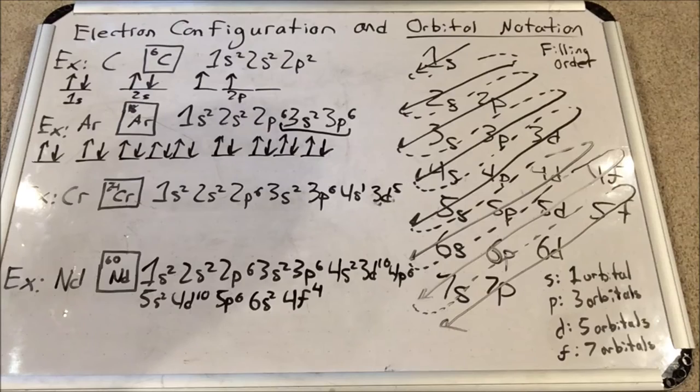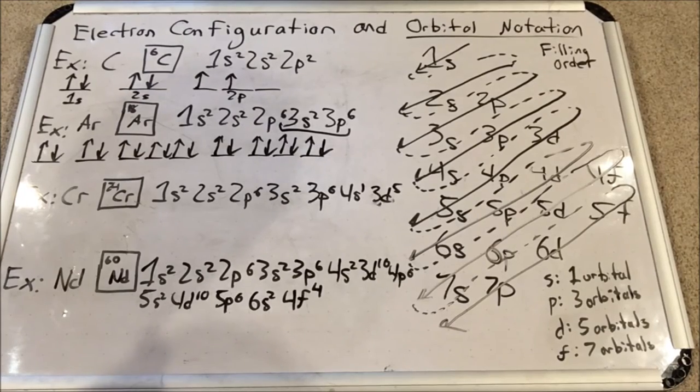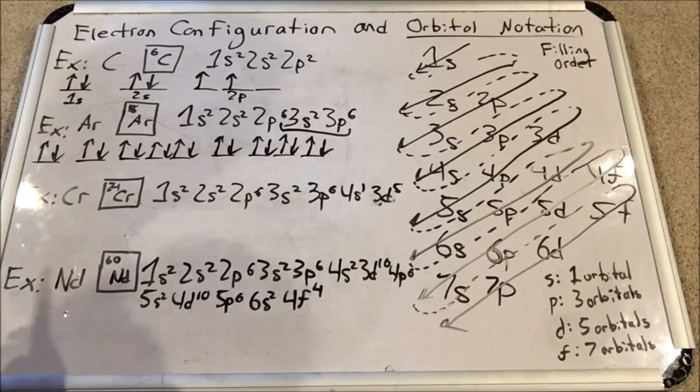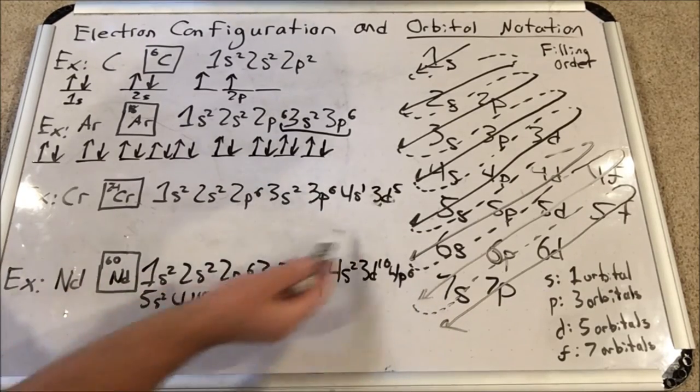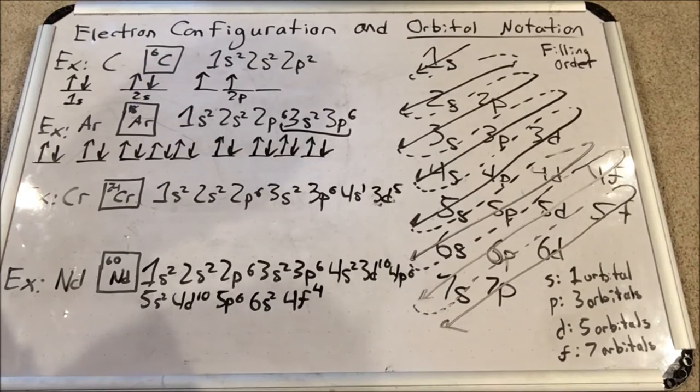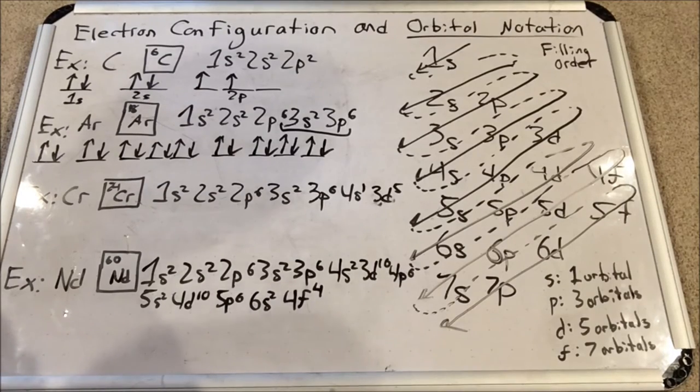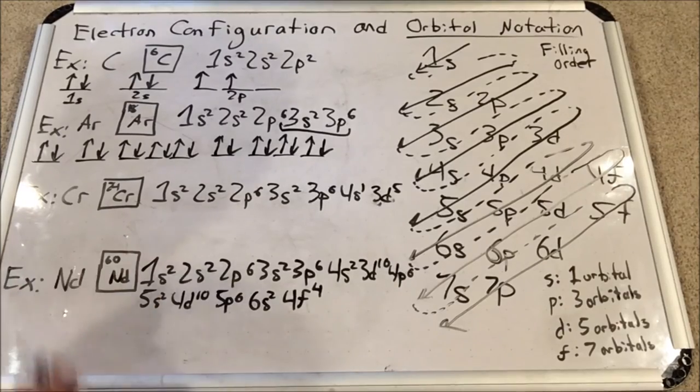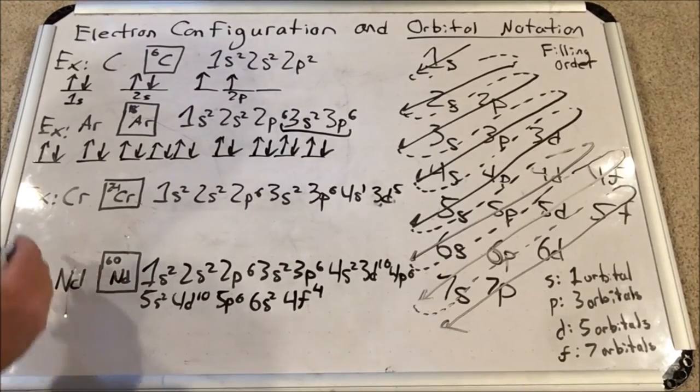Next, chromium. Now I'm going to have to start writing really small because now we have 24 electrons. Notice how chromium is one of those transition metals where the d sublevel takes one of the electrons from the higher level s sublevel because it's more stable. I'm going to speed through this first part and when we get to the interesting stuff I'm going to slow the video down.